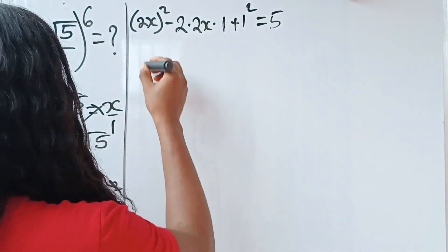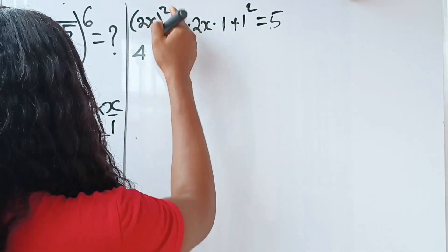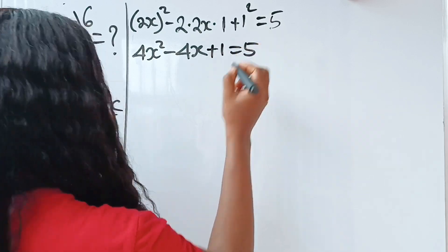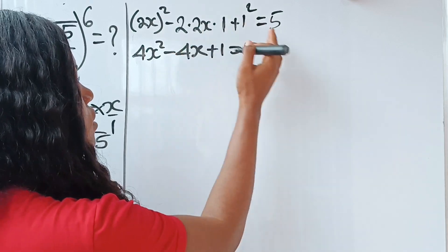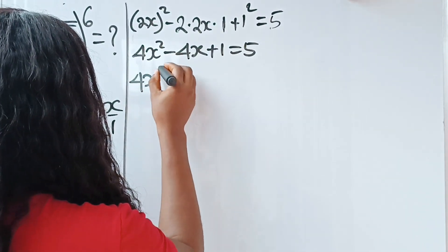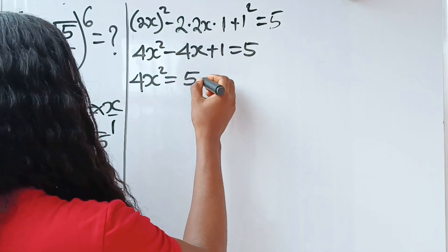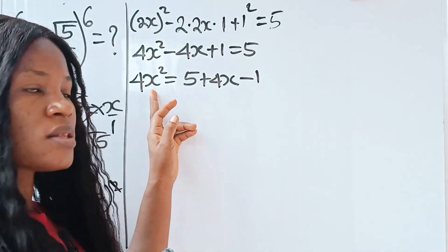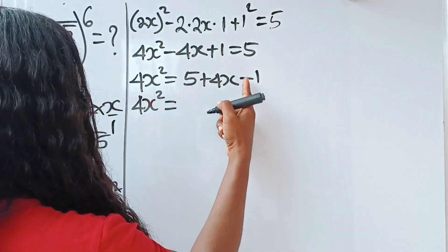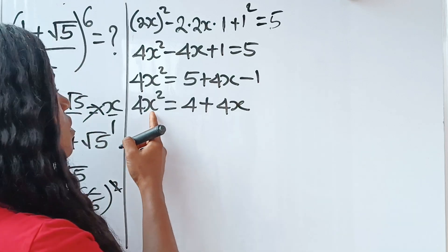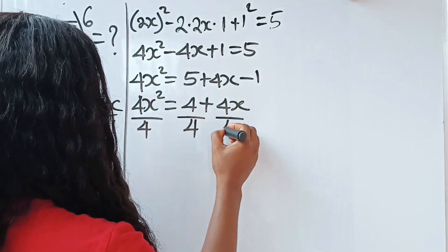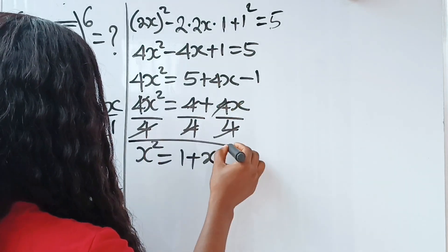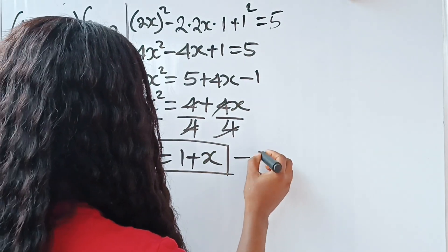Now, 2² gives us 4, so we have 4x², and 2 × 2 gives us 4, so we have −4x, then +1 = 5. Let's transfer everything to the other side: 4x² = 5 − 1 + 4x, which gives 4x² = 4 + 4x. Dividing both sides by 4, we have x² = 1 + x. This is a very important equation — let's call it equation 1.